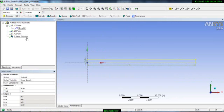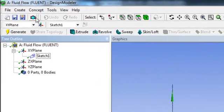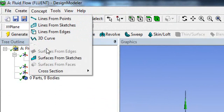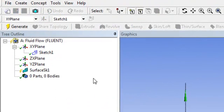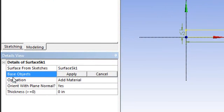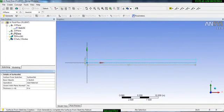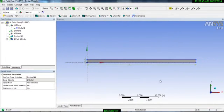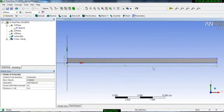Now we will develop the surface because we are doing 2D geometry. Go to concept and here you have the option surface from sketch. Select this, and in the detailed view it is asking for the base object. Our base object is sketch 1. Apply and then generate. Now you can see the surface and this is the 2D tube.